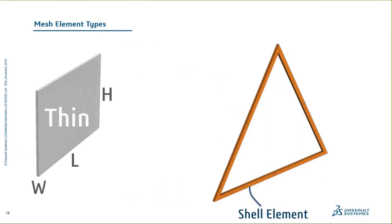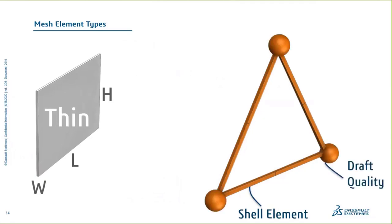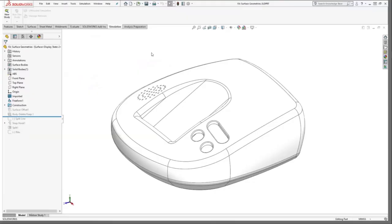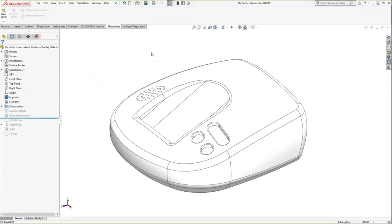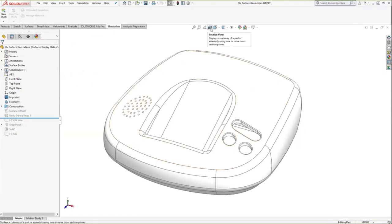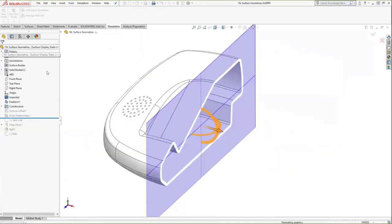The next element type corresponds to thin geometry — the shell element. This element has no thickness but does have length and height; the thickness is virtual. Just like the solid mesh, the shell element has draft and high quality types. There are three methods of generating a shell mesh inside SolidWorks Simulation: the old-school method, the newer method called 'define shell by selected faces,' and the sheet metal method.